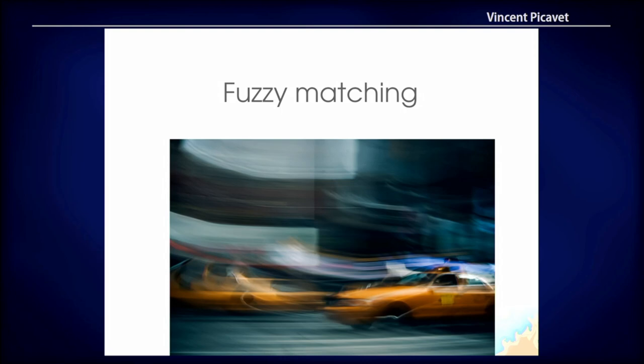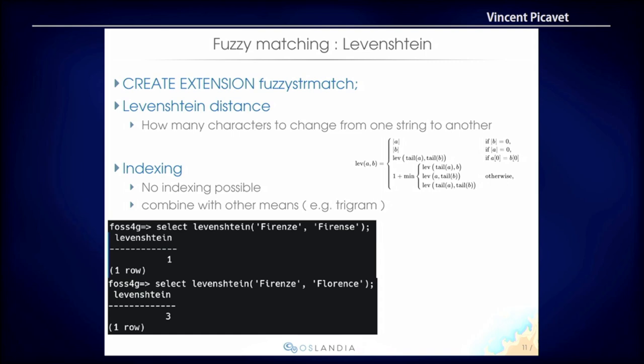Let's go to some more advanced PostgreSQL text matching with fuzzy matching. There is an extension called Fuzzy String Match which provides a few specific functions to help find text in a corpus. First you have the Levenshtein distance — that's basically how many characters you have to change to go from one string to another by inserting or deleting characters. For example, the Levenshtein distance between Firenze and Firenze is just one letter difference, so the distance is one. Between Firenze and Florence, the distance is three. So you can determine a kind of similarity between two words or expressions.